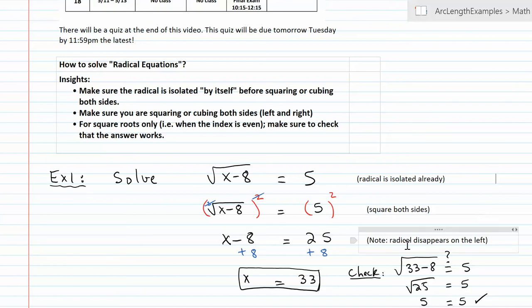Hence, on the third line, the radical is gone. And then on the right side, don't forget to square 5, which is 5 times 5. And that gives us 25. And then you can finally get x by itself.